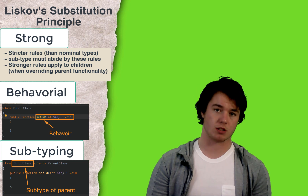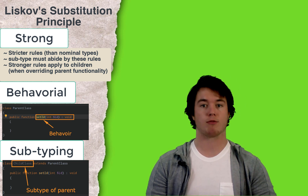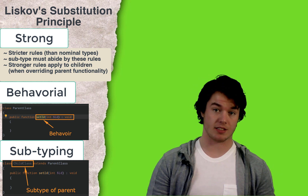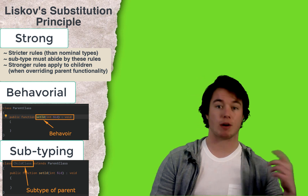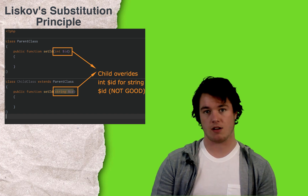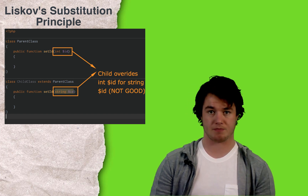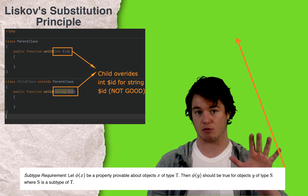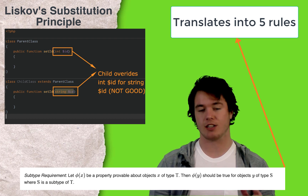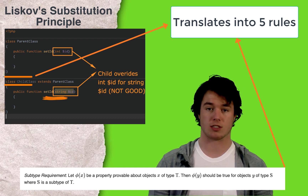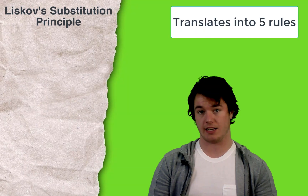Liskov's Substitution Principle is a specific implementation of Strong Behavioral Subtypes. This means we're going to enforce stricter rules on our child classes when we override parent behavior, also known as parent functions. Typically, when a child overrides a parent function with its own behavior, we're no longer able to ensure that child is substitutable at every location in our software where we can use that parent. This is where Liskov's Substitution Principle comes in. We can break this mathematical formula down into five simple rules.